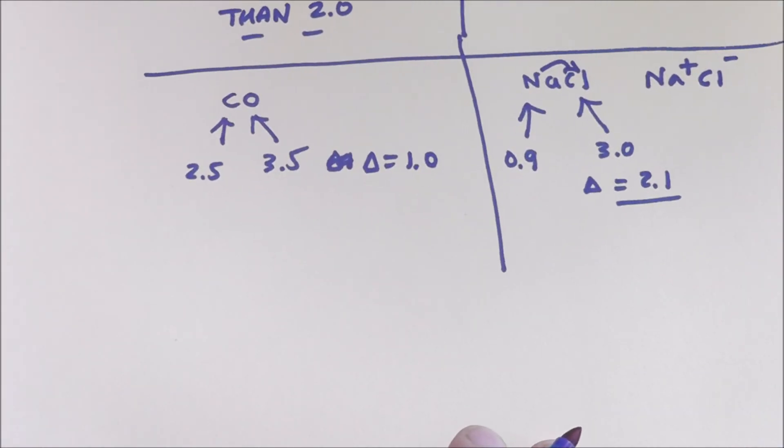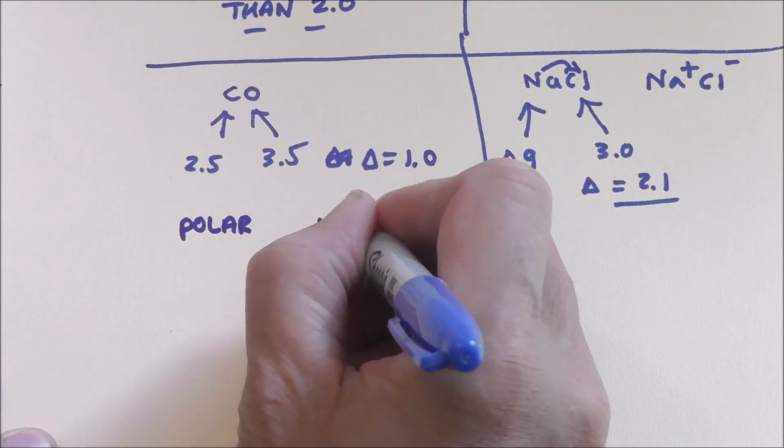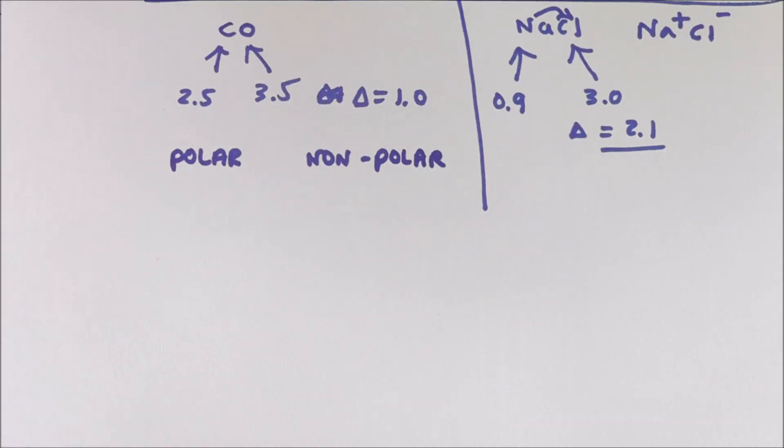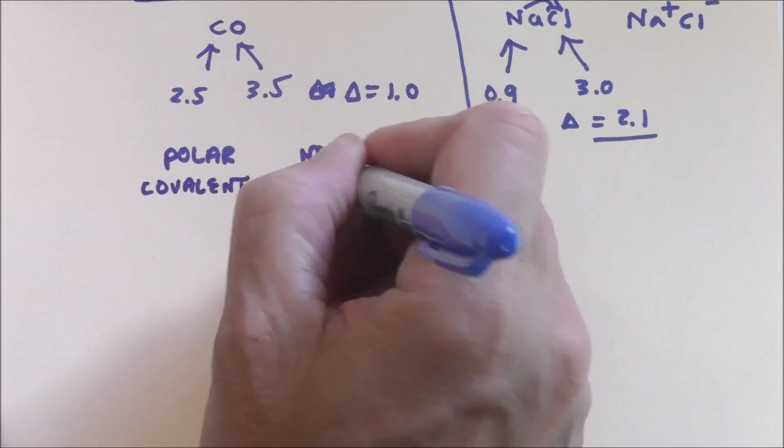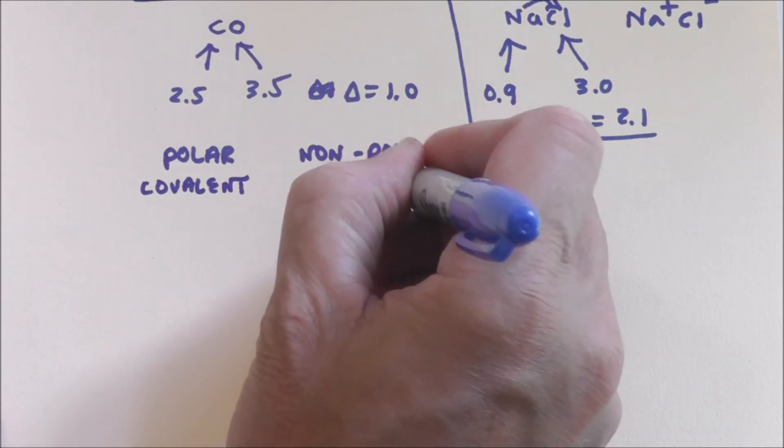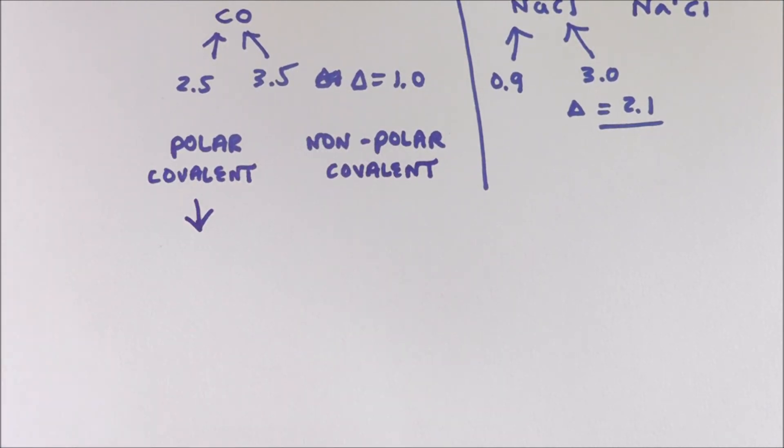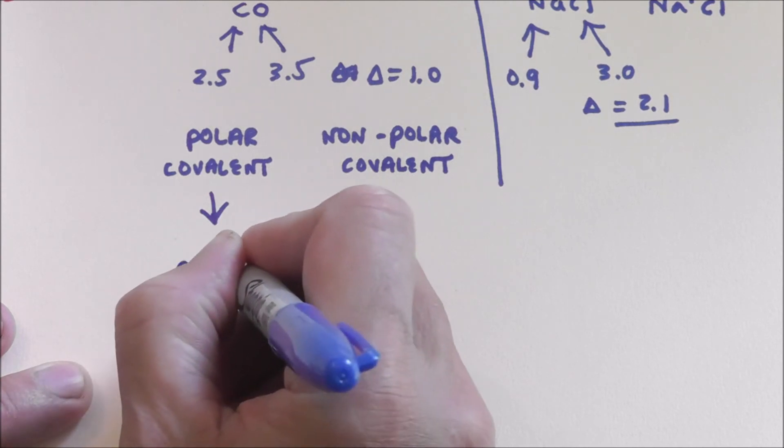So, now, a subset of covalent is this idea of polar and nonpolar. So, this is where we're going to start right off with Gen Chem 2. These are both, we'll call these both covalent. Polar covalent and nonpolar covalent. So, what's the difference between these two? Polar covalent, what you've got is an electronegativity difference of greater than 0.5 and less than 2.0.